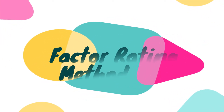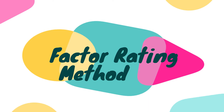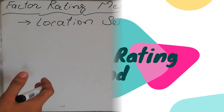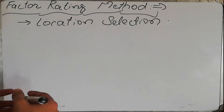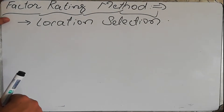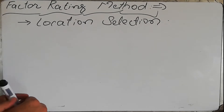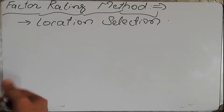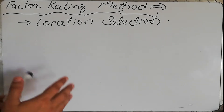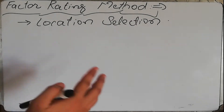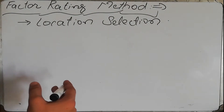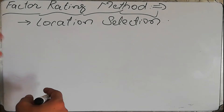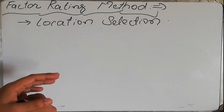Hello and welcome back. This lecture is about the factor rating method. This method basically provides us with the analysis of different sites. You will have two or three sites, and we will look at each site and use this method to find out which site should be preferred for our project, industry, or company. We are trying to select a location for our project and then, based on different sites, prefer a single one as our final location.